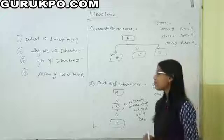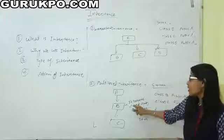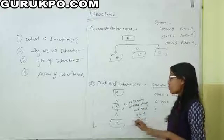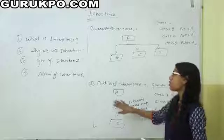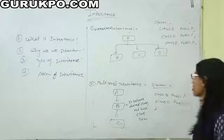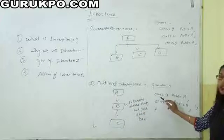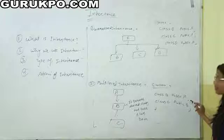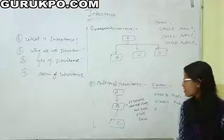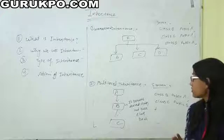The next level is multilevel inheritance. In multilevel inheritance, one class sometimes behaves like a base class and sometimes like a derived class. For example, class B works as a derived class for A, and also behaves as a base class for C, because C inherits all the properties of B, and B inherits all the properties of A — so automatically C inherits all the properties of A. The syntax is: class B colon public A, and class C colon public B. This is the multilevel inheritance concept.